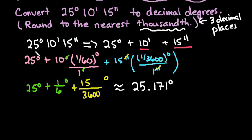So we converted from 25 degrees, 10 minutes, 15 seconds, to decimal degrees, which is 25.171 degrees. As always, thanks for watching. If you have any questions, please let me know. If there are additional topics, please let me know that as well.